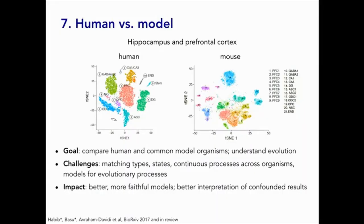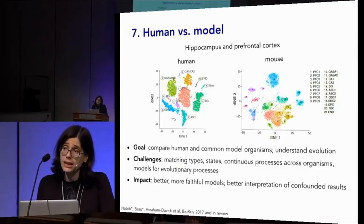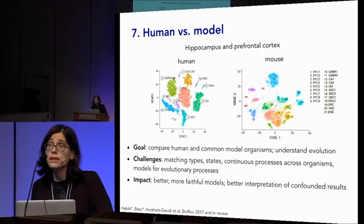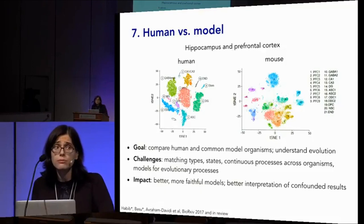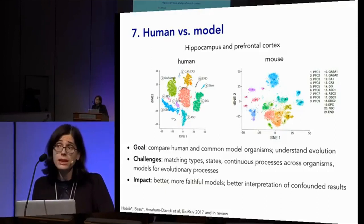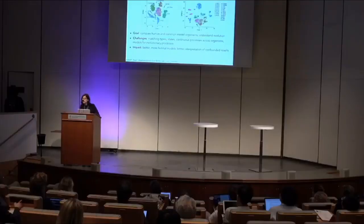In biology, we can never only study humans — there are things we cannot do in people but can do in model organisms, including functional validations that will follow on the human cell atlas. By having a human cell atlas and comparing it to model organisms, we can tell how good our models are, where they need improvement, and resolve many ongoing arguments in the community. This will come with computational challenges — we will have to rethink comparative genomics, comparative biology, and questions like alignment when matching cell types, states, and continuous processes across organisms.